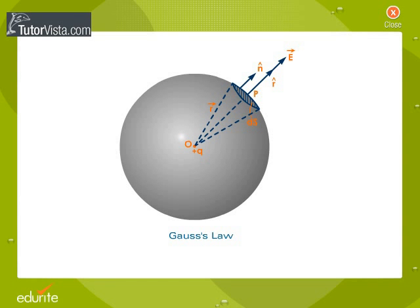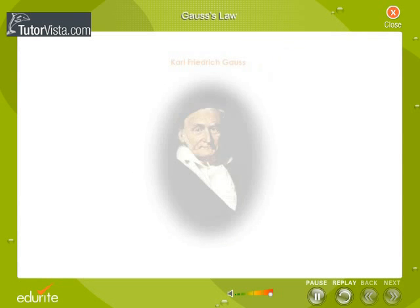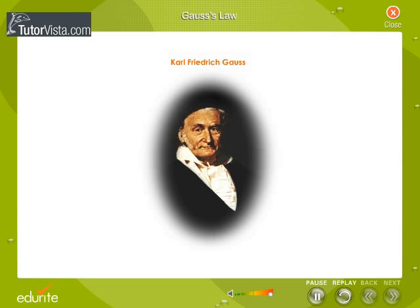Gauss's Law. Carl Friedrich Gauss, a German mathematician, gave a law named after him that gives the relationship between the electric flux through a closed surface and the net charge enclosed by the surface.